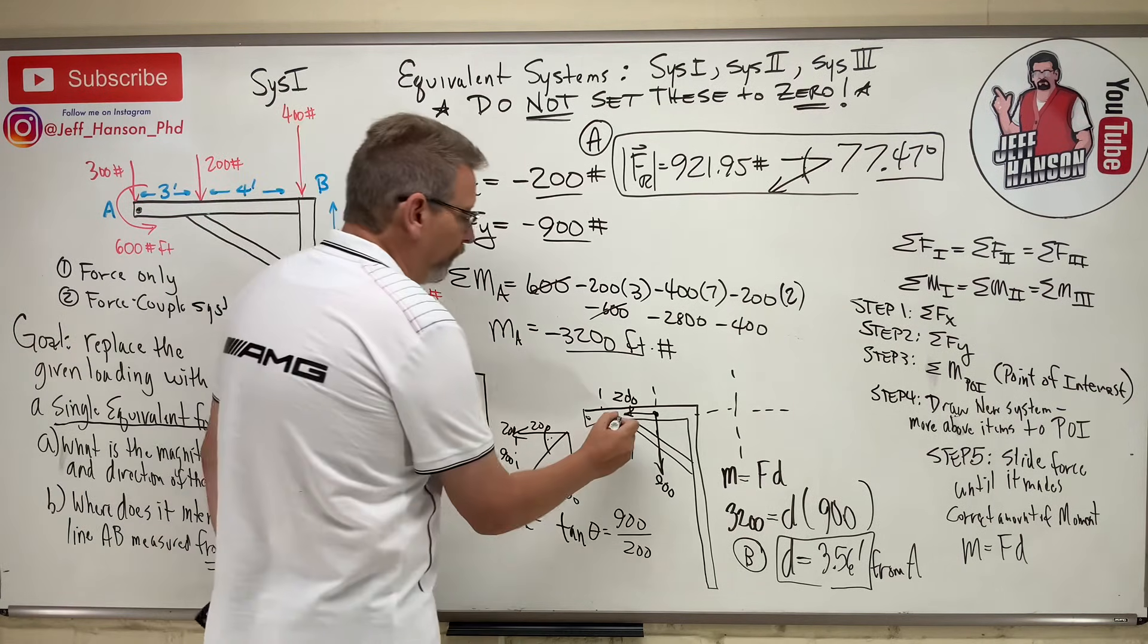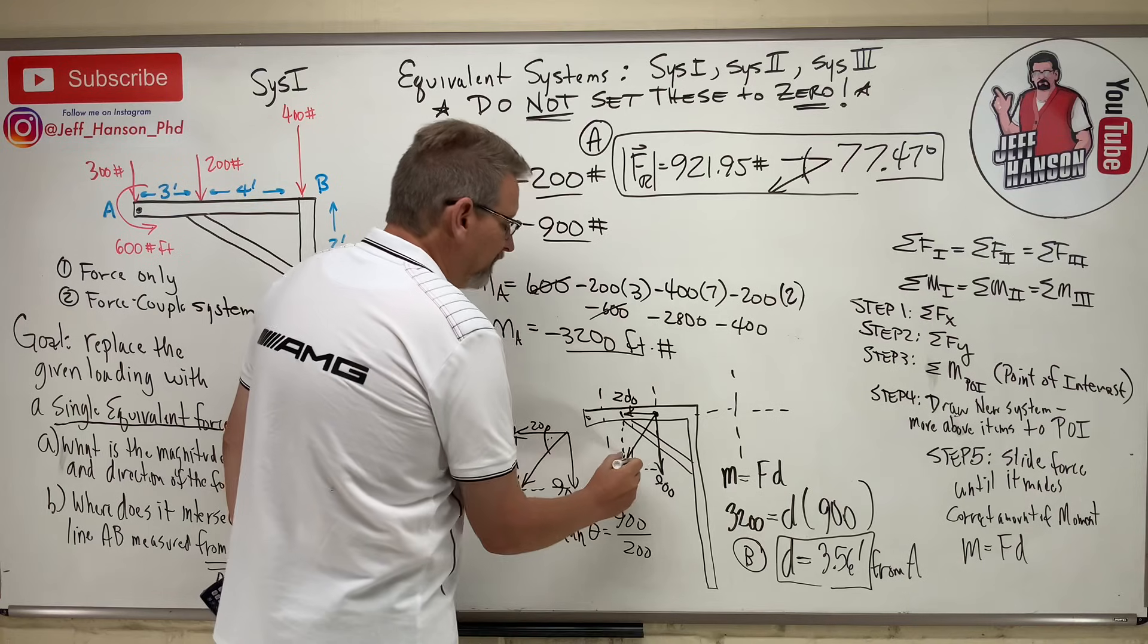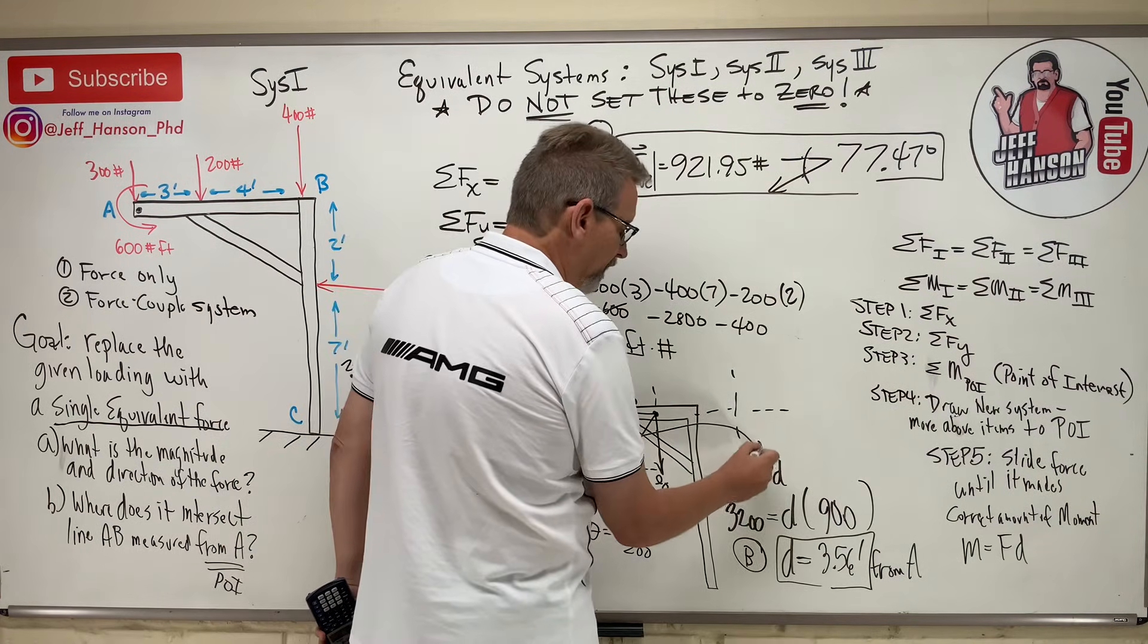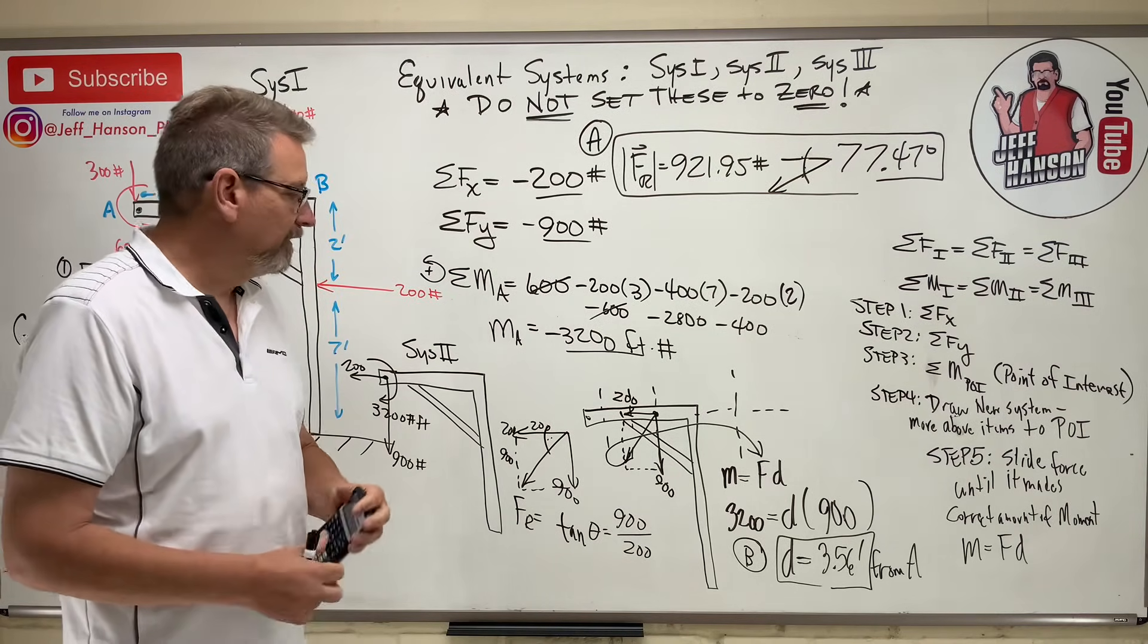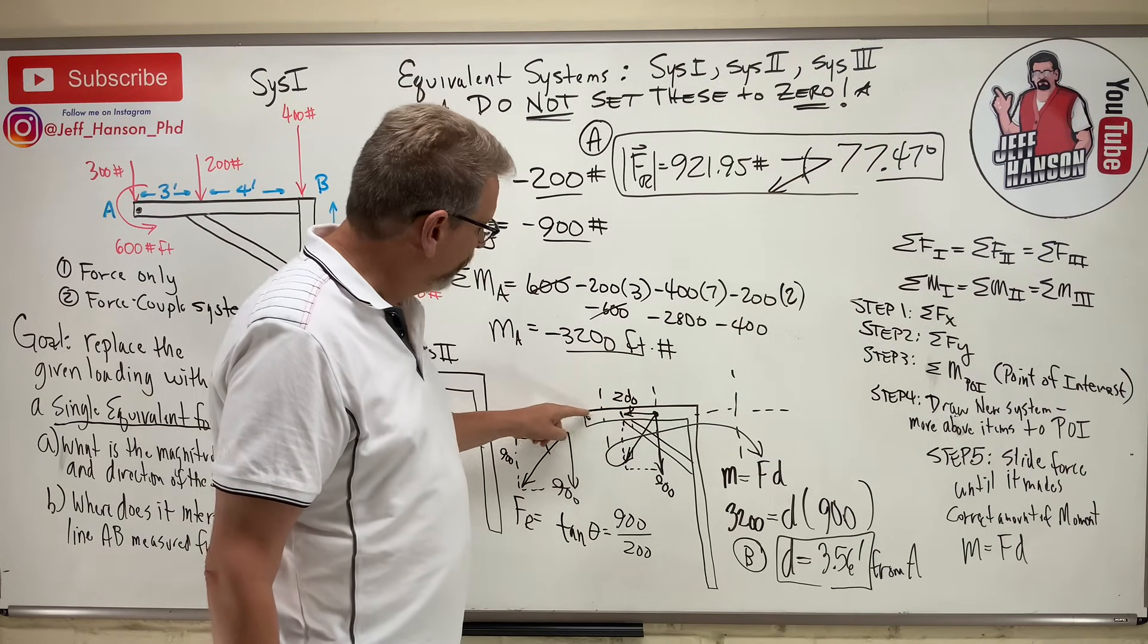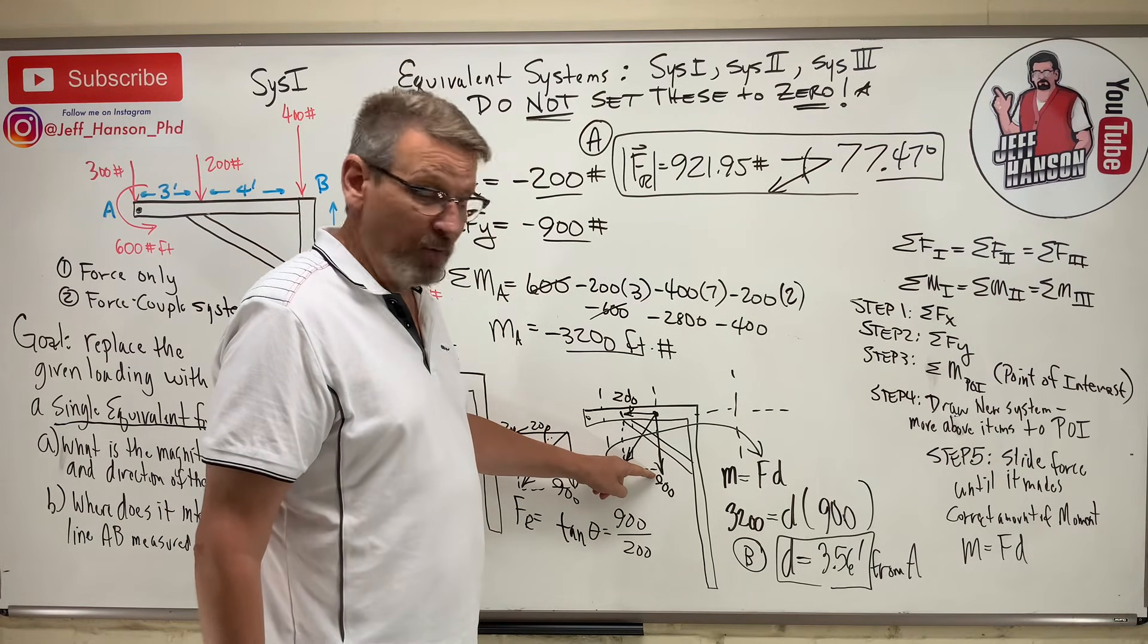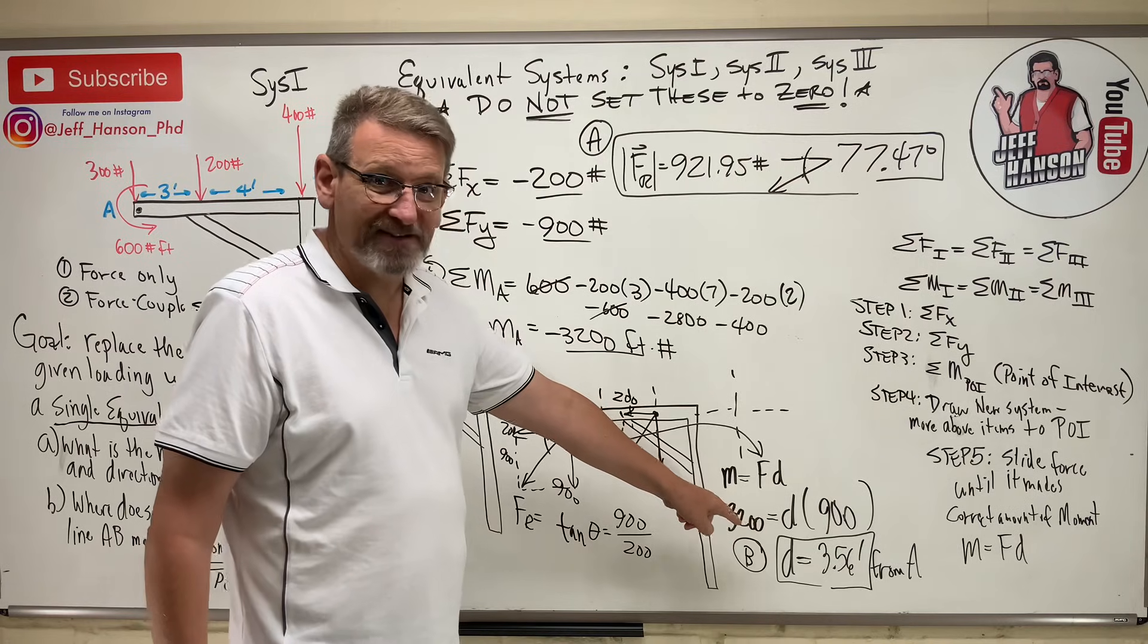Biggest mistake people make. Here's the number one mistake right here. Taking this guy right here, finding the resultant, and then putting that resultant force in for F, right there. That's the number one mistake people do. It's not the resultant. The resultant has X and Y in it, and the X doesn't make any moment. The Y, the perpendicular component, is the one doing all the work. That's the one that goes in the equation. So, don't mess that up.